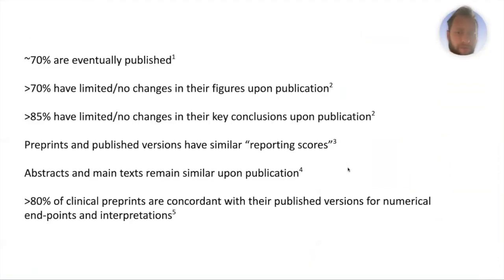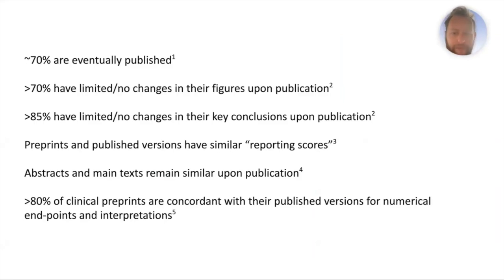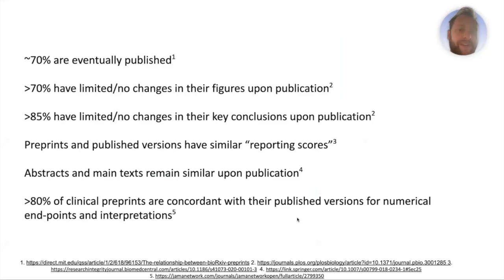To summarize the data: roughly 70% of preprints are eventually published; well over 70% have limited or no changes in figures; over 85% have limited or no changes in their key conclusions; preprints and published versions have similar reporting scores; the abstract and main text remain similar upon publication; and over 80% of clinical preprints match their published versions for endpoints and interpretations. So what is peer review actually doing?